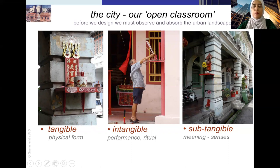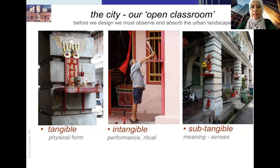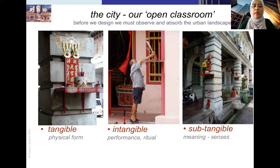This is normally what architects and urban planners think about when faced with cultural heritage of the built environment. As it says, the city is our open classroom — before we design, we must observe and absorb the urban landscape. We must look at the big picture, not just things in isolation. Not just looking at the tangible heritage, the physical form — it must be looked at together with the intangible heritage, such as performance and ritual.